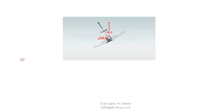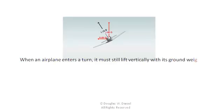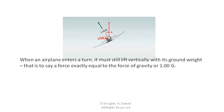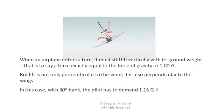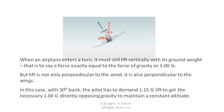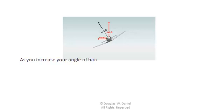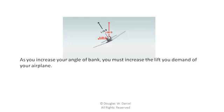When an airplane enters a turn, it must still lift vertically with its ground weight — that is to say, a force exactly equal to the force of gravity, or 1.00 g's. But lift is not only perpendicular to the wind, it is also perpendicular to the wings. With a 30-degree bank, the pilot has to demand 1.15 g's of lift to get the necessary 1.00 g's directly opposite gravity to maintain constant altitude. As you increase your angle of bank, you must increase the lift you demand of your airplane, and your lateral acceleration also increases, giving you a faster turn.